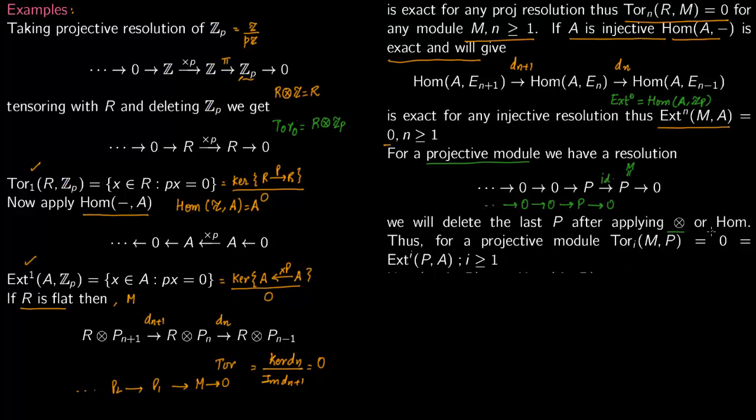So then you can now apply tensor or Hom to it. So thus the Tor you will get is 0, and Ext you will get is also 0. It doesn't matter what you apply because you're going to land up in 0. So Ext and Tor are 0 for this kind of operation.